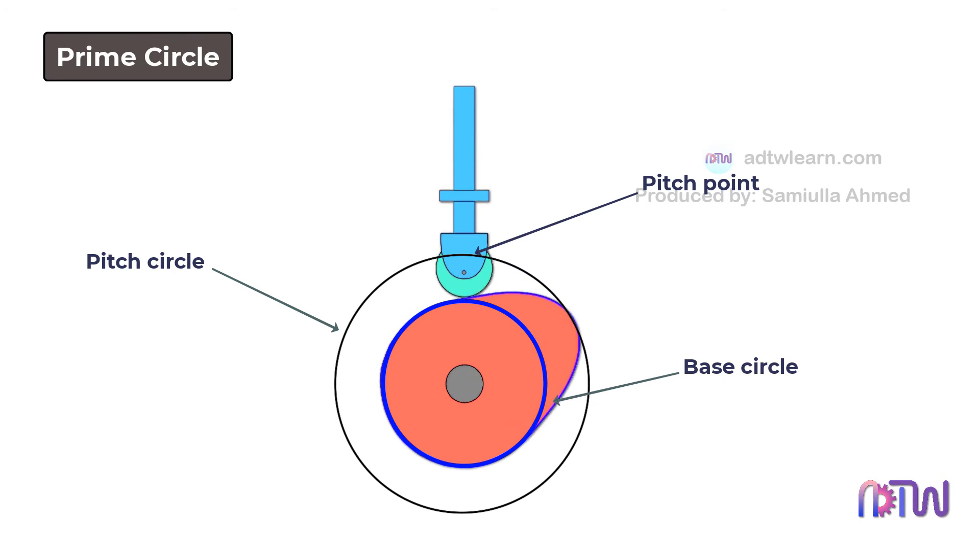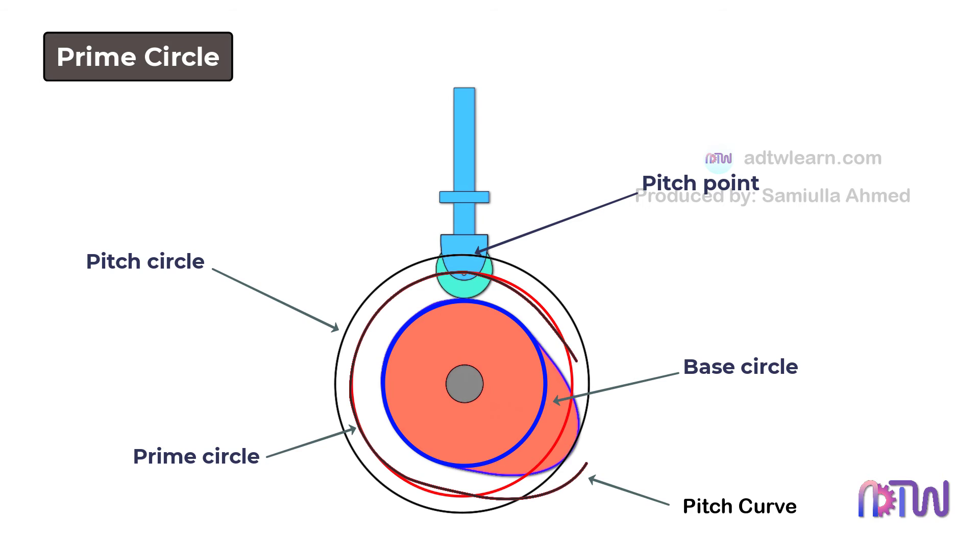Prime Circle: The prime circle is the smallest circle that can be drawn from the center of the cam and is tangential to the pitch curve. We can see that the radius of the prime circle is the sum of the radius of the base circle and the radius of the roller follower.